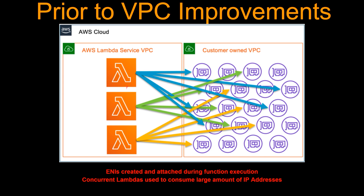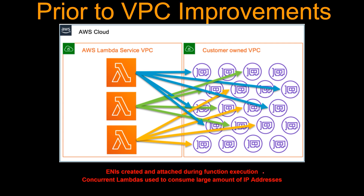One problem is every time your Lambda is scaling — let's say you are running 10 concurrent copies of your Lambda — each execution of your Lambda is creating an ENI. So if this Lambda is running five times concurrently, it's going to create five different ENIs. The way ENIs were being created, they were created and attached during the function execution in real time. And creating an ENI takes a little bit of time — not in the milliseconds range, actually in the seconds range. So when your traffic increases, your Lambda scales, and every time it scales it has to create this ENI and that execution needs to wait.